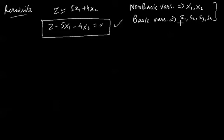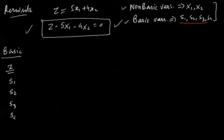Now you will be starting with the basic variables and then we will go about how to do it. After rewriting your objective function and defining your non-basic and basic variables, you will now make a simplex table. Now how do you make a simplex table? This is how you make a simplex table. This is the basic variable column.